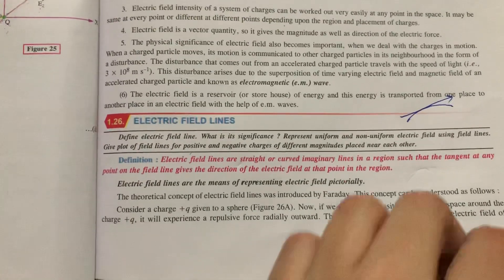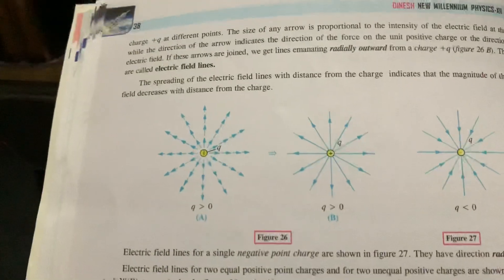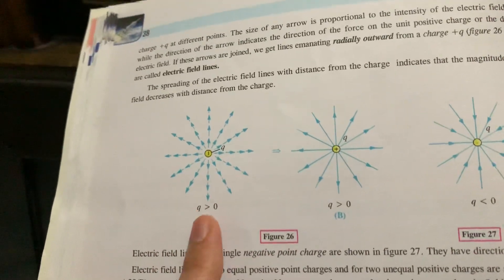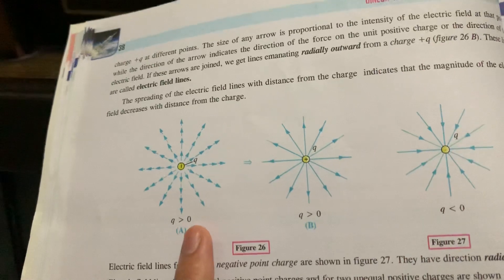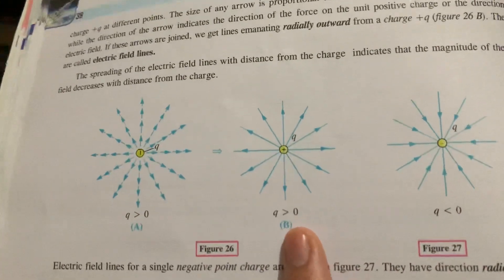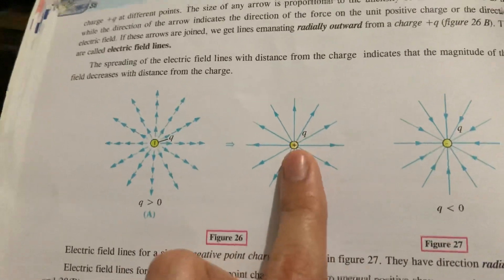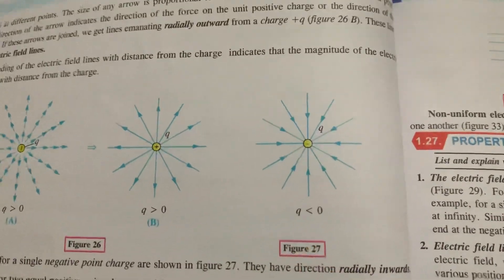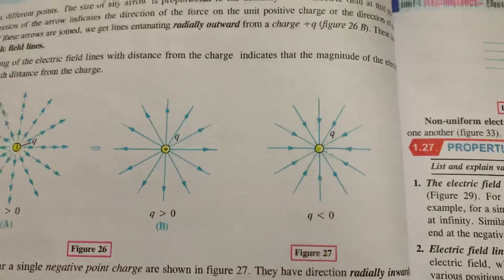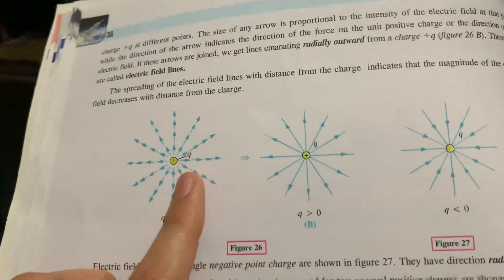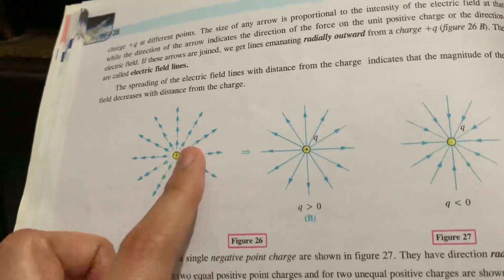Now I will show you one example. Just look at the diagram carefully. Here is the first diagram with charge plus Q — Q is greater than 0, which means Q is positive. In diagram B, Q is also greater than 0, so this is again a positive charge. In the third diagram, Q is less than 0, which means it will be a negative charge. Now you have to notice one thing: here in the first situation, the density of the arrows is more and the arrows are pointing outward.